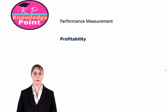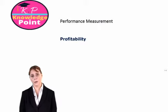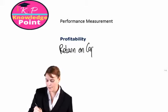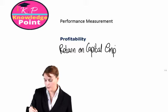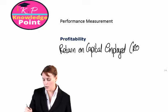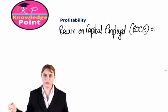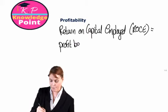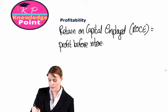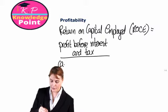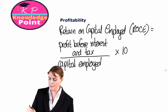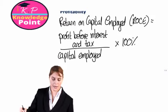There's a number of different ways in which profit performance can be measured. What we are going to focus on in this session is something called return on capital employed, or ROCE. Return on capital employed is measured as profit before interest and tax, divided by capital employed, and multiplied by 100% to express it as a percentage.